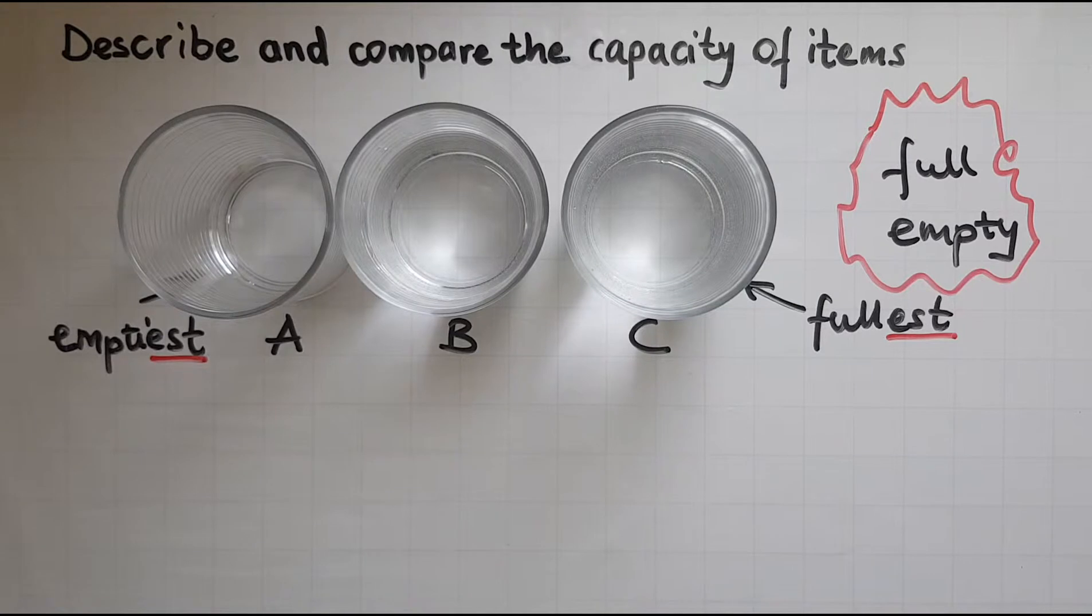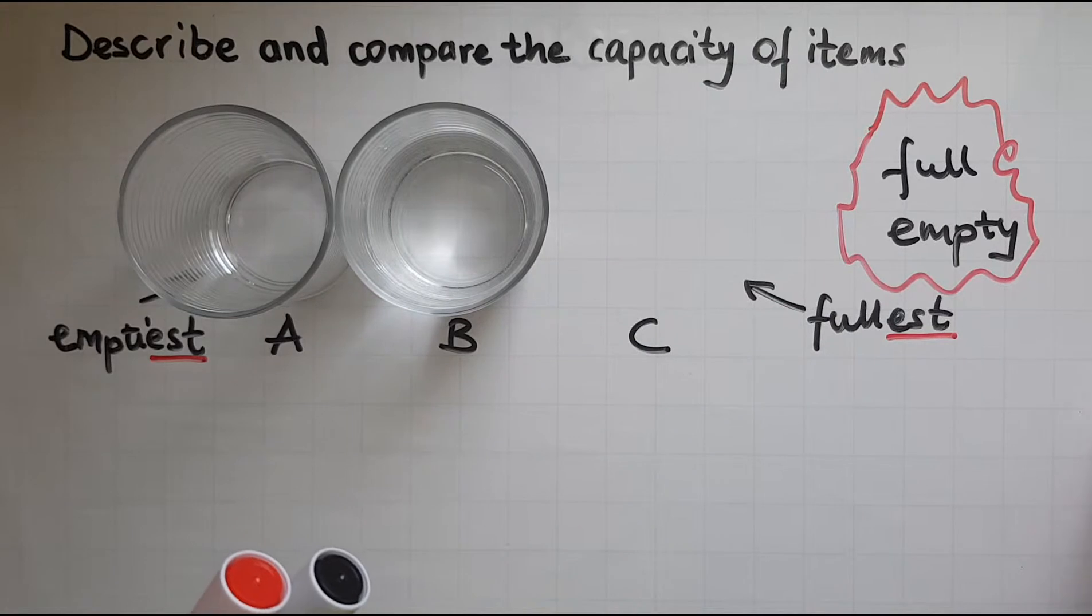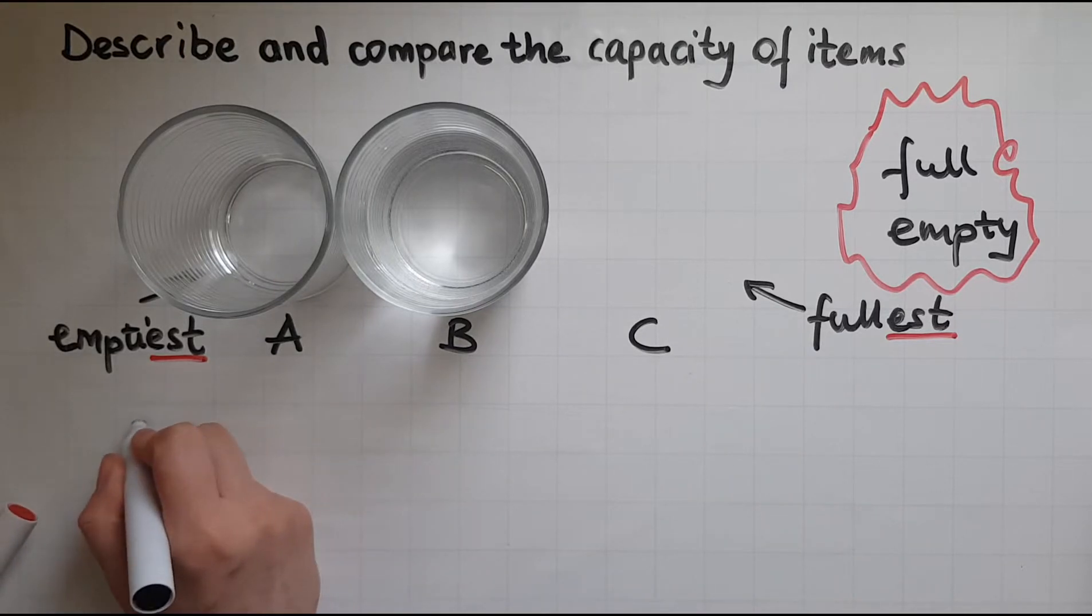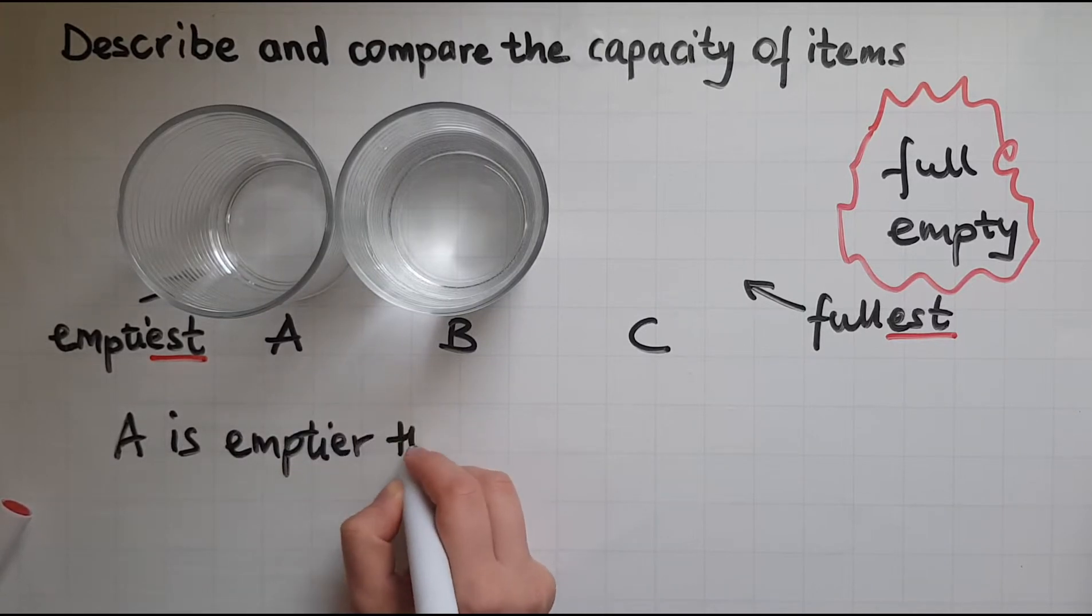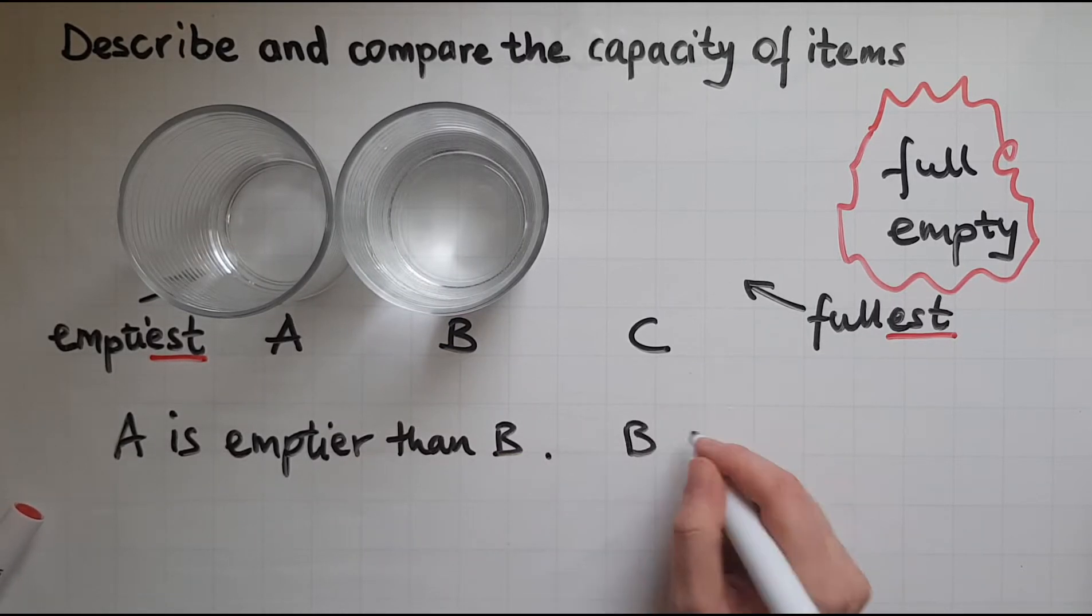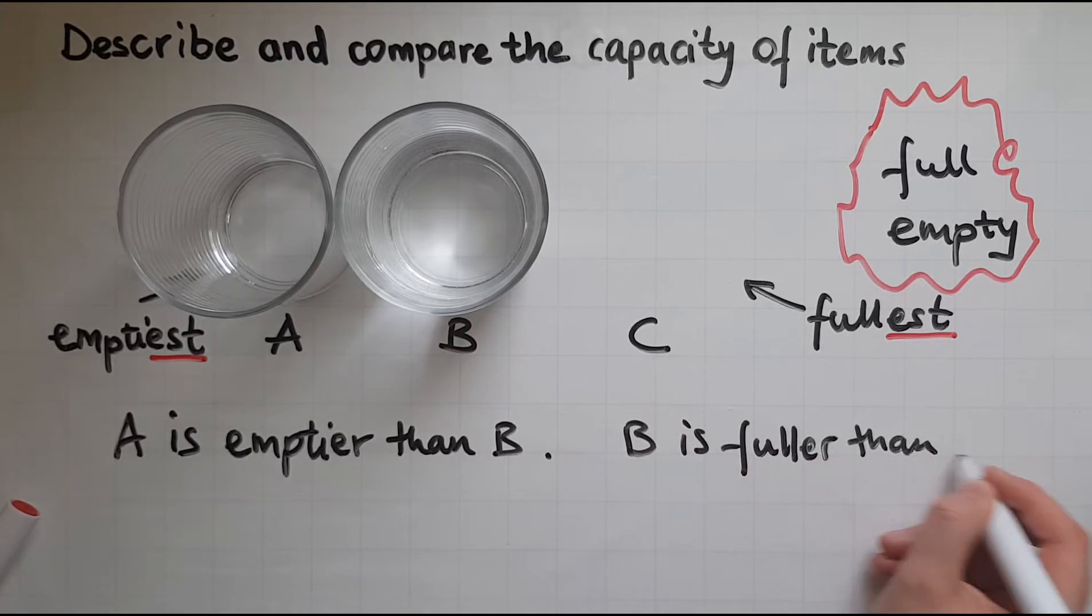Now I'll compare each two of the glasses. So let's compare glass A and B. There is no water in glass A but there is some water in glass B. So I'll say A is emptier than B. B is fuller than A.